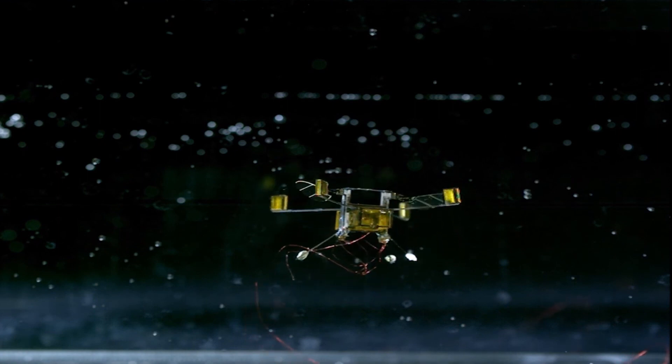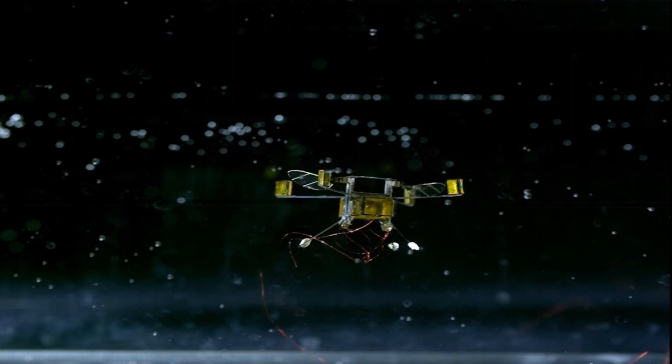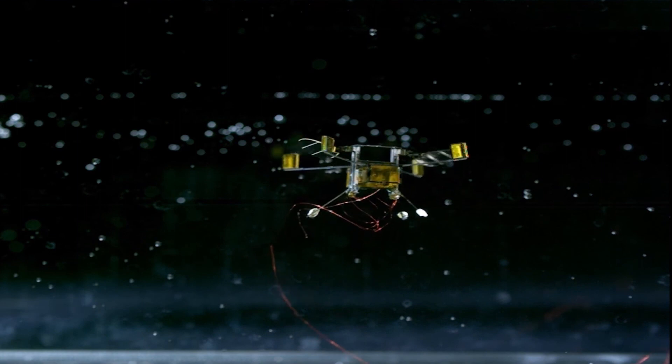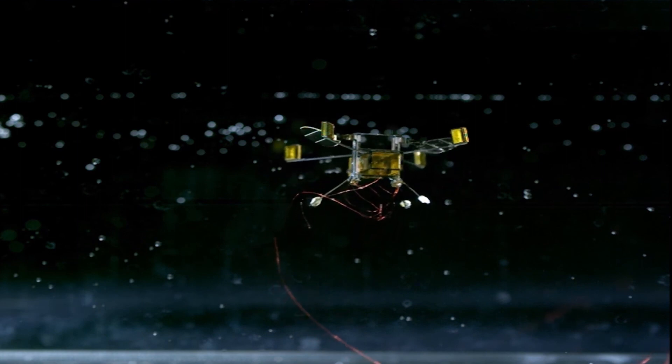This information can help scientists monitor and analyze the health of ecosystems in real time. By deploying a network of robot bees, we can create a comprehensive map of ecological conditions, aiding in early detection of environmental changes and potential hazards.